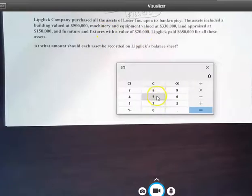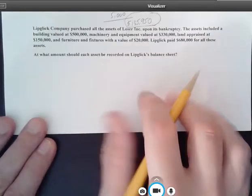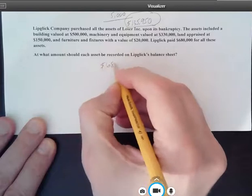And then we're going to divide it by what we paid. So we've got $500,000 for the building, and we've got $330,000 for the machinery and equipment. We have $150,000 for the land, and then we have furniture and fixtures valued at $20,000. So if we take our $680,000 purchase price and we divide it by the $1,000,000 assessed value or market value, we come up with a decimal of 0.68. So let's go ahead and show that. We paid $680,000.